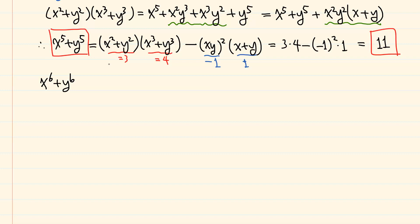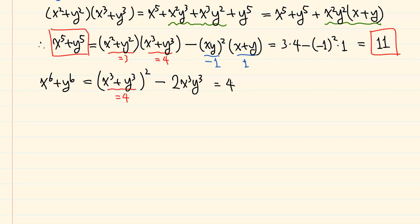For the power of 6, we use the square formula for x cubed plus y cubed, so we have x cubed plus y cubed squared minus 2 times x cubed y cubed. This value was 4, so we have 4 squared minus 2 times minus 1 cubed, which gives 18.